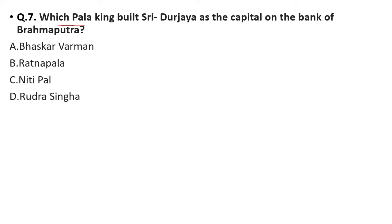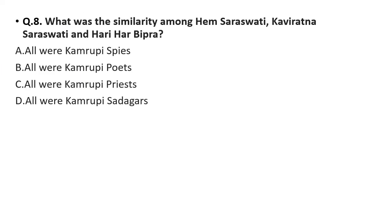Question 7: Which Pala King built Sri Durjaya as the capital on the bank of the Brahmaputra? Option A: Bhaskar Varman, option B: Ratnapala, option C: Niti Pal, option D: Rudra Singha. The correct answer is option B, Ratnapala.